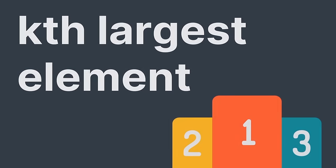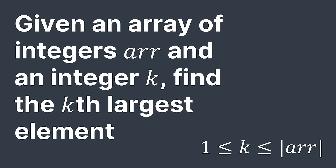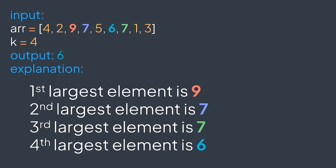Welcome back. In this lecture, we will solve the Kth largest element problem. We are given an array of integers and an integer K, and we're asked to find the Kth largest element. For example, if r = [4, 2, 9, 7, 5, 6, 7, 1, 3] and K = 4, the output should be 6 — because the largest element is 9, the second largest is 7, the third largest is 7, and the fourth largest is 6.